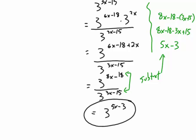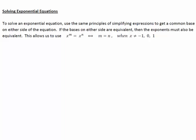And there is our expression simplified to a single base with a single exponent of 5x minus 3. Now, what about an equation? To solve an exponential equation, it is a very similar process — we still simplify to get the entire equation down to a single base. Once we have a single base to exponent m equal to the same base to exponent n, then the exponents must equal each other. That is the important piece.